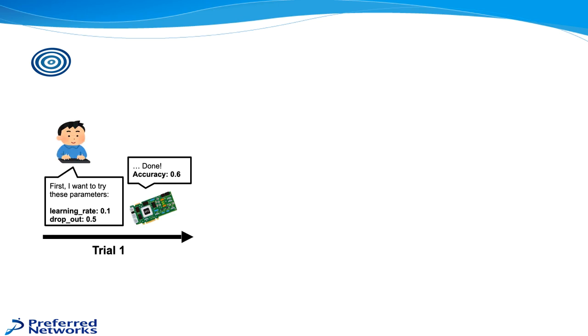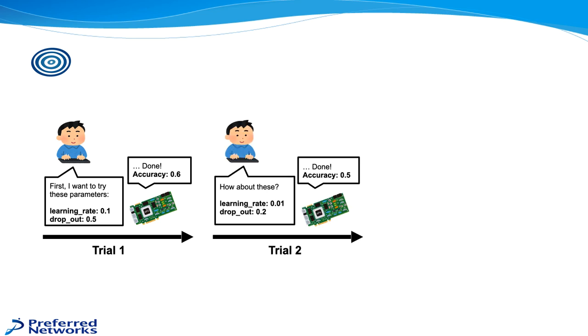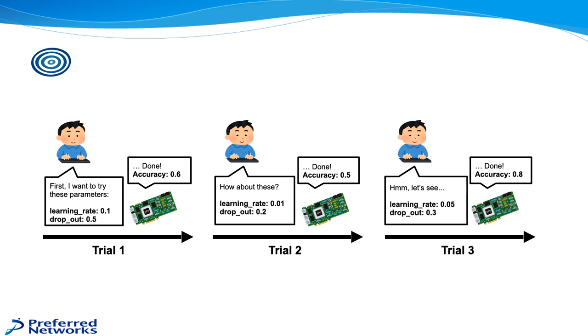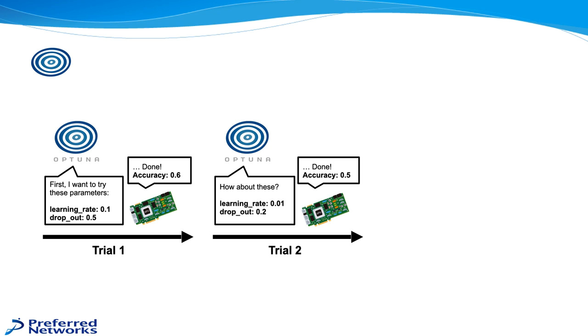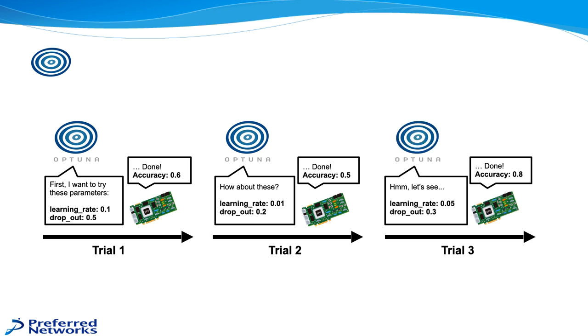But then usually what people start doing is they do this by hand. They take the things they know about, say the learning rate or the dropout, and try a setting for that, 0.1 learning rate, 0.5 dropout rate, and get a certain accuracy and run that and then do it again. 0.01 learning rate, 0.2 dropout, get a certain accuracy, try again, 0.05, 0.3 dropout, get a different result. But this is manually intensive, and the progress that we want to make is to have Optuna do this for you automatically and more quickly than could be usually done by hand, or perhaps in parallel.